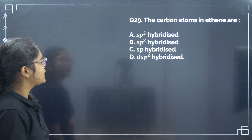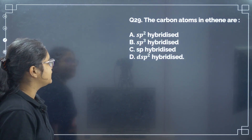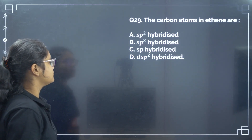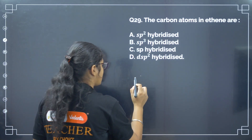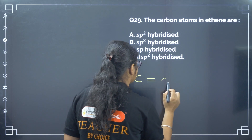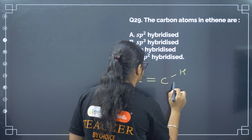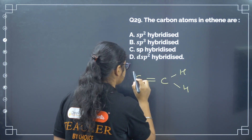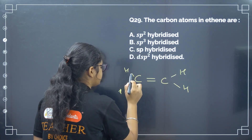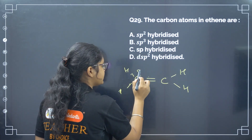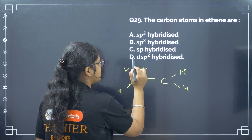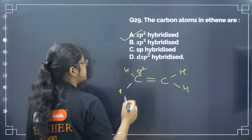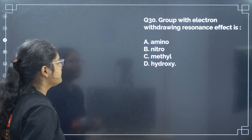Next: the carbon atoms in ethene are? Each carbon in ethene has three sigma bonds, so they are SP2 hybridized. Correct answer is option number A.